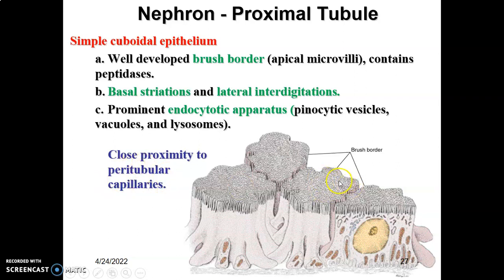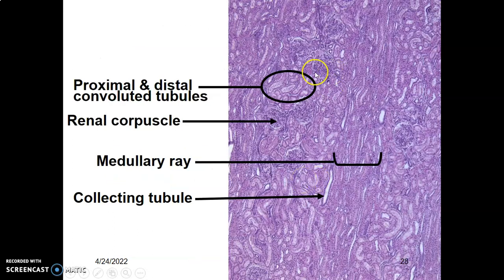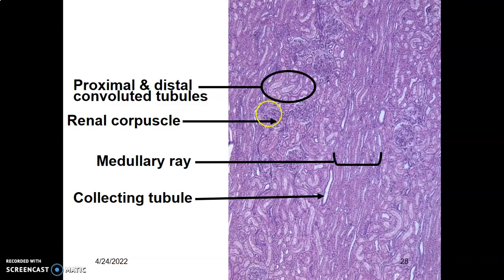These are the brush borders of the proximal convoluted tubule. How do you tell the difference between the proximal convoluted tubule and the distal convoluted tubule? Both have simple cuboidal epithelium. But if you see a brush border or apical microvilli, that means you have the proximal convoluted tubule. Without microvilli, you know that is a distal convoluted tubule.